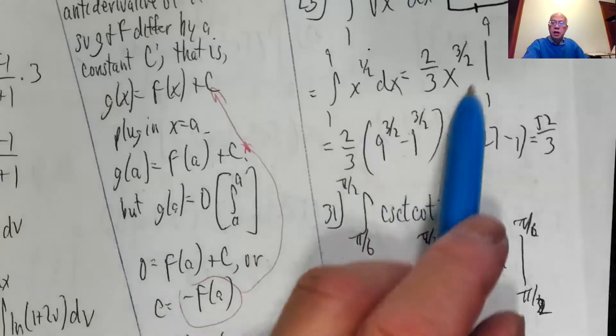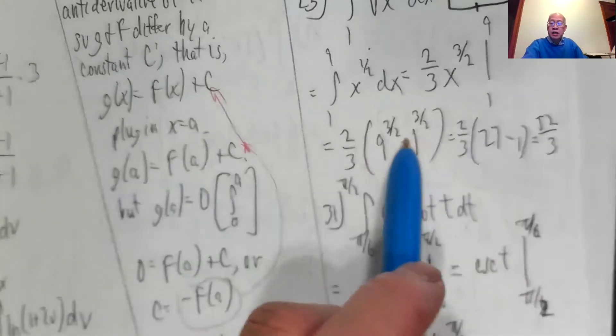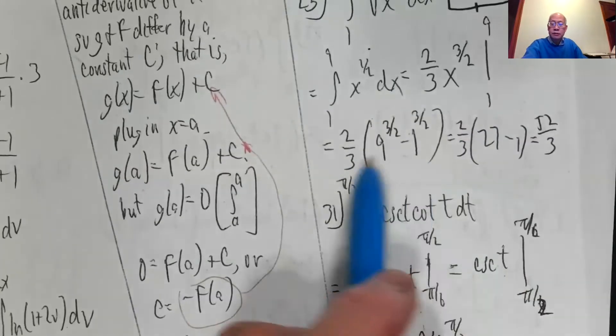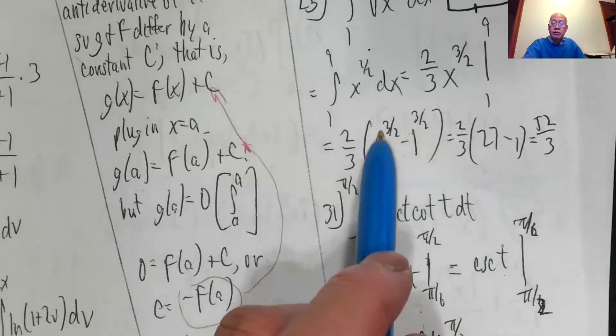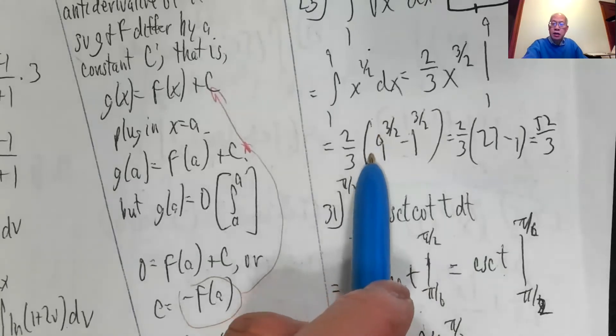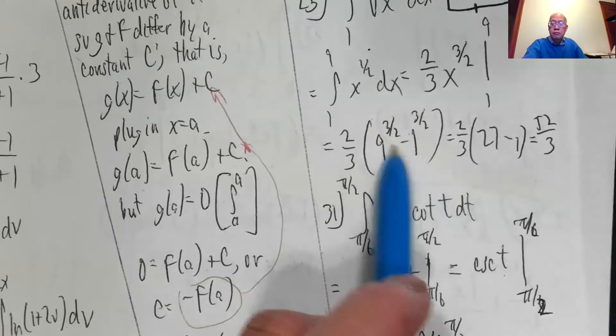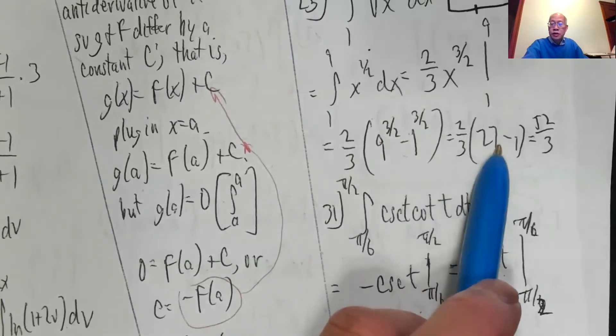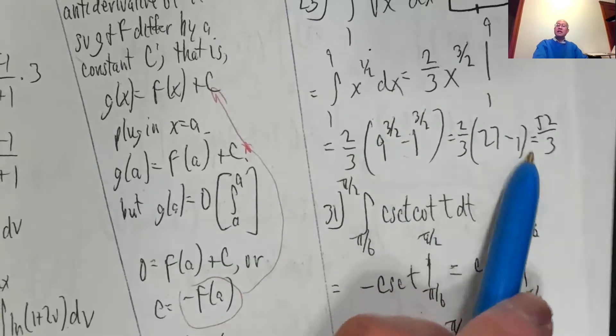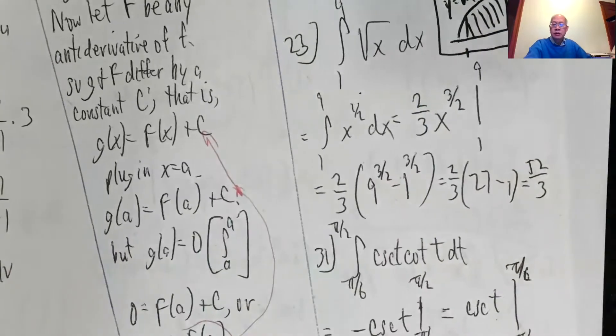Factor out the two thirds, plug in nine, nine to three halves minus plug in one, one to the three halves. So nine to the three halves means square root of nine, three, cubed 27 minus one to anything is one. So that's 26 times two, 52 over three. That's the exact area under the curve here.